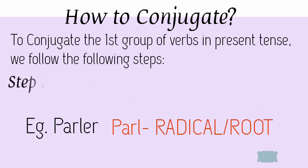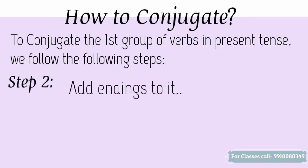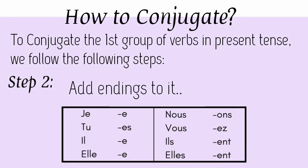Now comes step two. After removing the ER at the end of the main verb, we have to add endings to it. The endings are as follows: with je, we add E; with tu, ES; with il and elle — third person singular — we add E; with nous, we add ONS; with vous, we add EZ; and with ils/elles — third person plural — we add ENT.